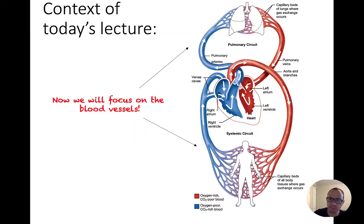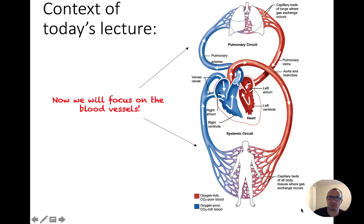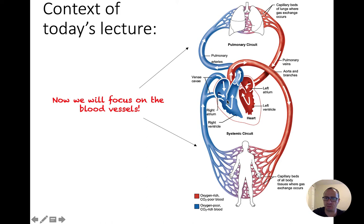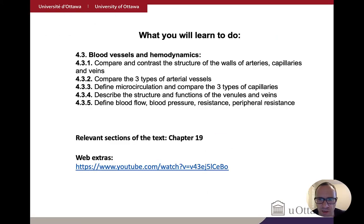Now we're going to focus on blood vessels — this material will not be on the exam on November 19th. It's just the heart material on the exam from my section. Blood vessels is a very general term that includes arteries, veins, and capillaries, all emanating from the heart. They work with the lymphatic system to circulate fluids. Today is really about defining the anatomy we'll be working with in the next two lectures — a lot of definitions, pretty straightforward.